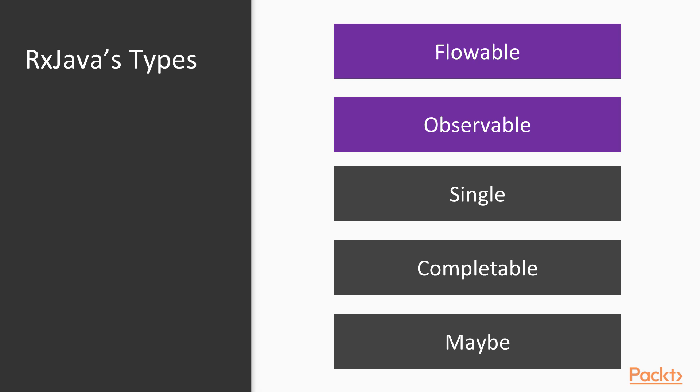We have flowable, observable, single, completable, and maybe. In this video, we are going to talk about flowable and observable.